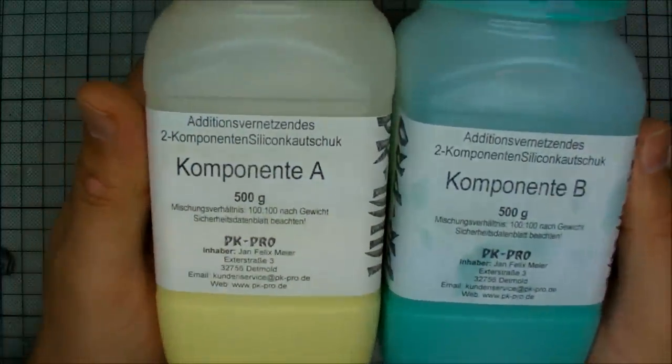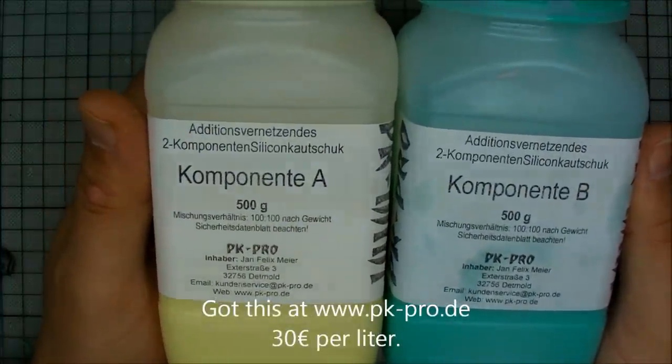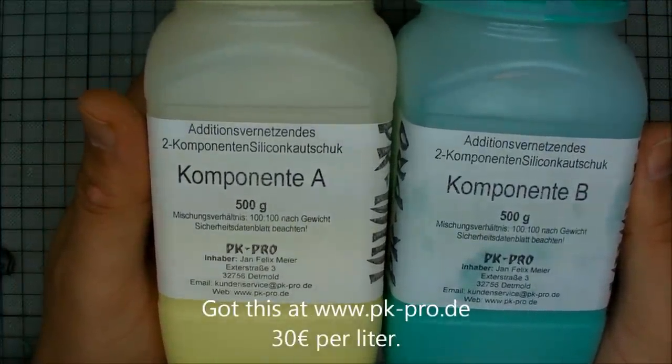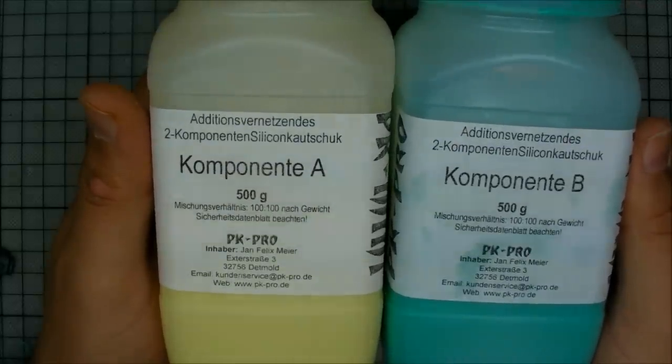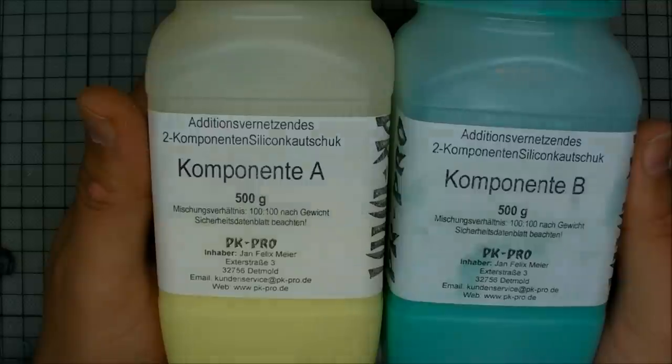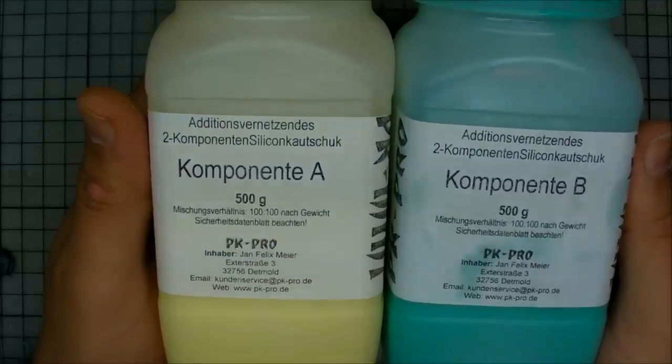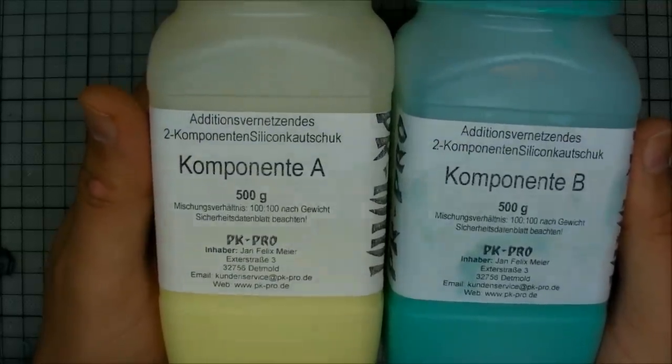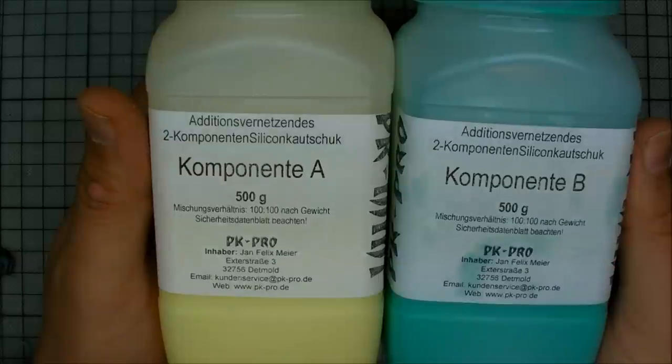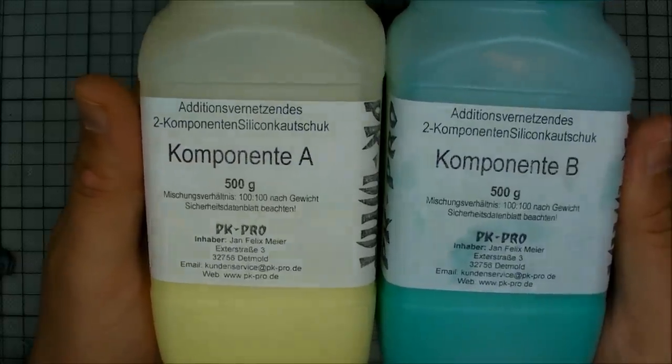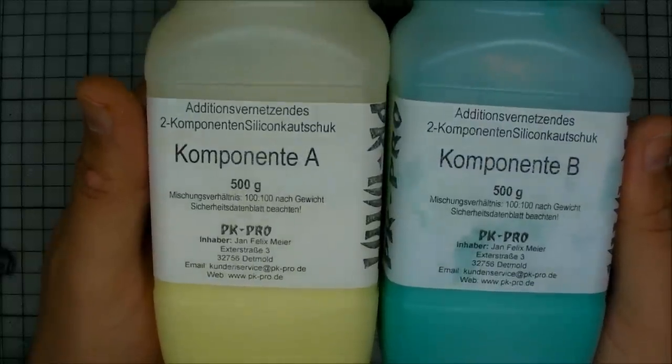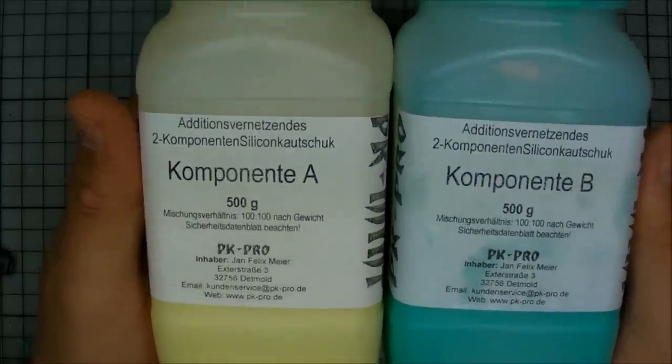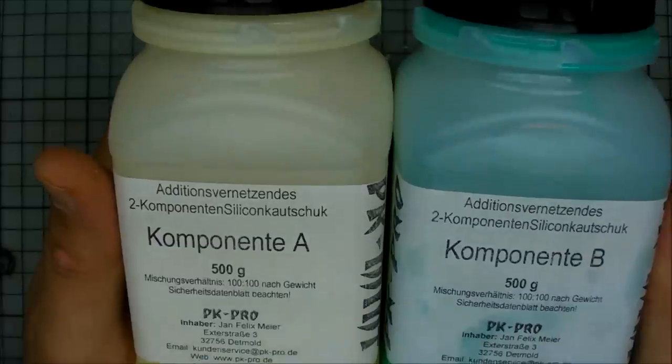Then of course we need silicone and what I have here is something from a German supplier PK Pro. It's in two components, component A and B. In this particular instance you actually use one part of each by weight. Silicone typically is one to one by weight, but there's other ones out there where you might want to make sure whether it's by weight, whether it's by volume, whether it's one to one and so on.